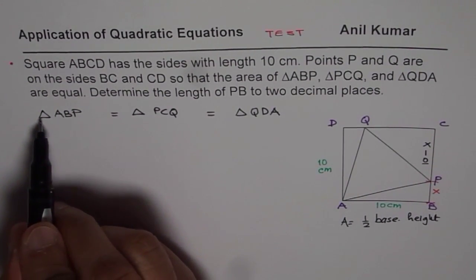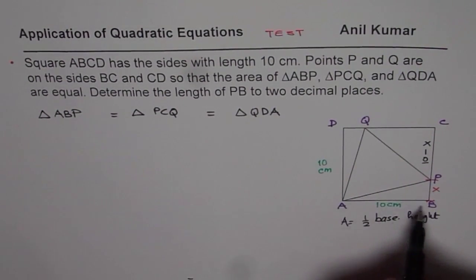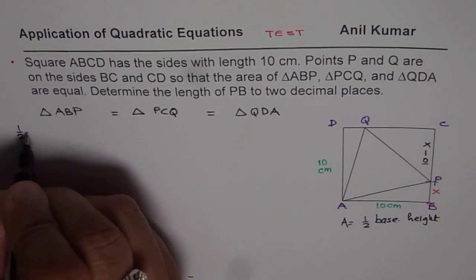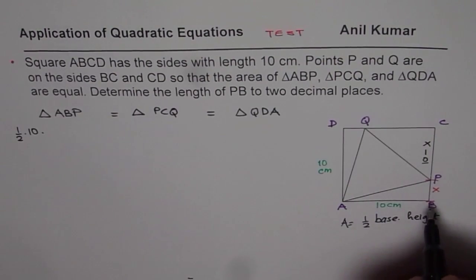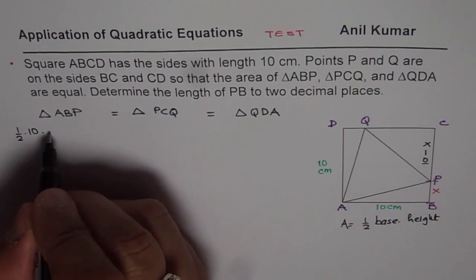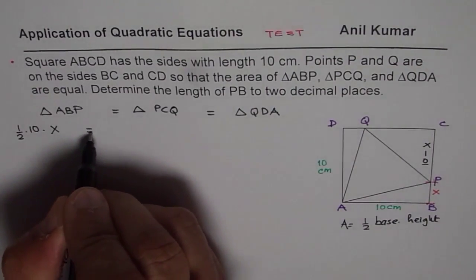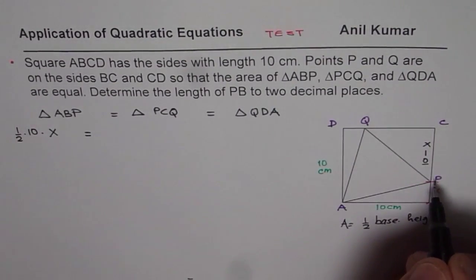So let's write down area of triangle ABP, that is ABP, base is 10 for this, so it is half of 10 times height, which is PB. So instead of PB, I can write X is equal to area of triangle PCQ.